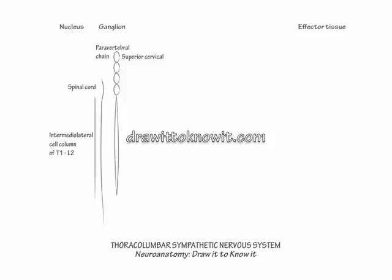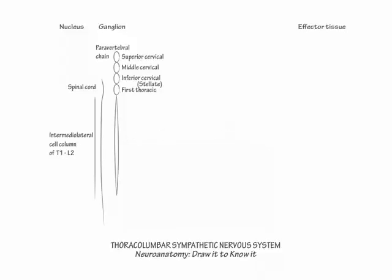The superior cervical ganglion sits at the top of the chain, the middle cervical ganglion beneath it, the inferior cervical ganglion beneath it, and the first thoracic ganglion beneath it. The inferior cervical and first thoracic ganglia combine to form the stellate ganglion.